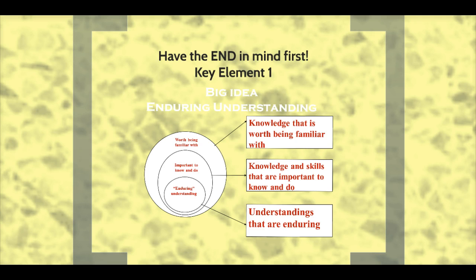The answer is in creating enduring understandings. An enduring understanding, or EU as it is often called, is a sentence or two that offers a particular proposition about a big idea. A good EU is characterized as one that includes being enduring, being a big idea, having lasting value beyond the classroom, a core process or idea at the heart of a discipline, abstract, being counterintuitive, and often having misunderstood concepts. Whatever an enduring understanding is, it is embedded in facts, skills, and activities that can be lifelong.